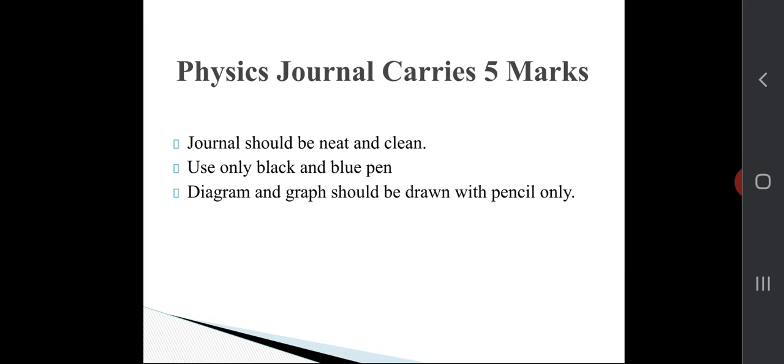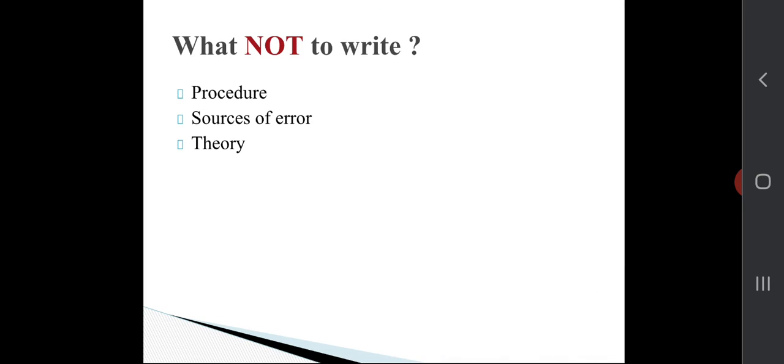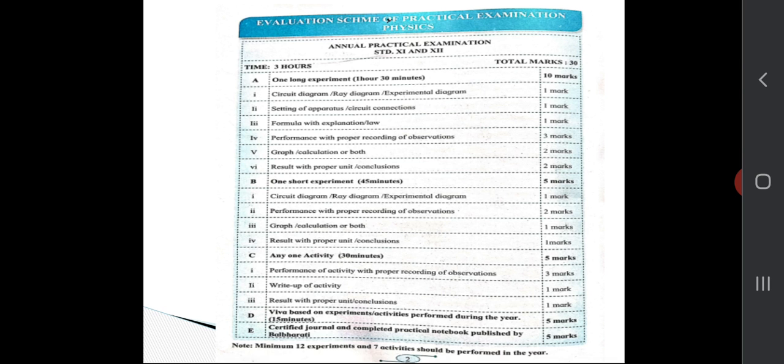This is the list for the experiments for this academic session. This is the mark allotment: for long experiments, 10 marks will be there, and two short experiments along with one activity you have to perform will be of 5 plus 5 marks, and 5 marks for viva and 5 marks for your journal. So in this way, 30 marks practical will be there.